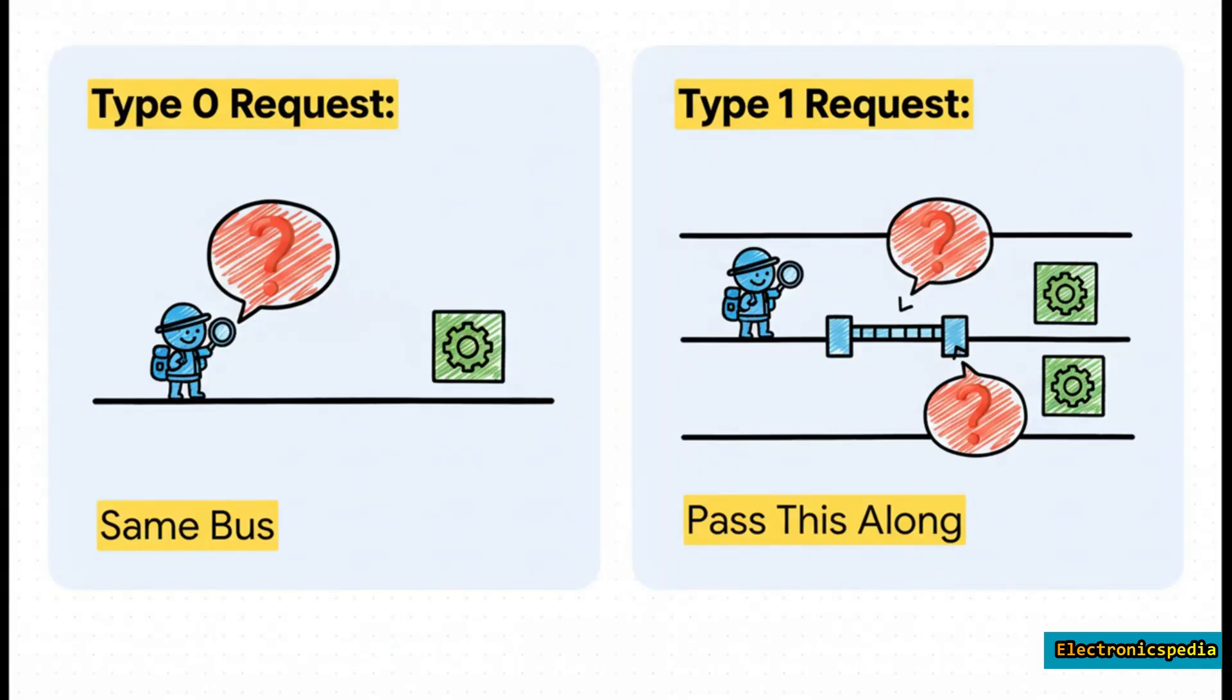And really, our explorer only asks two types of questions we call configuration requests. A Type 0 request is basically yelling down the current highway 'Who are you?' It's sent to a potential device on the same bus the explorer is on right now. A Type 1 request is different.